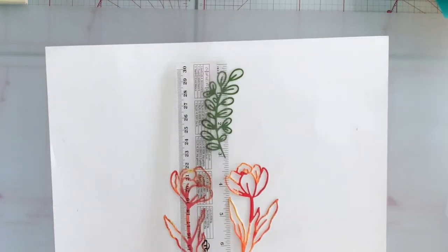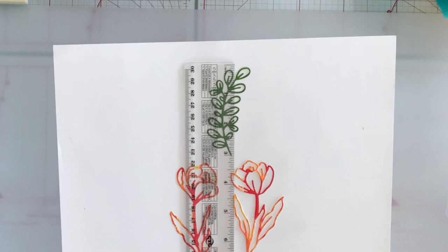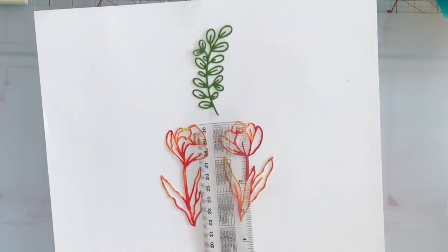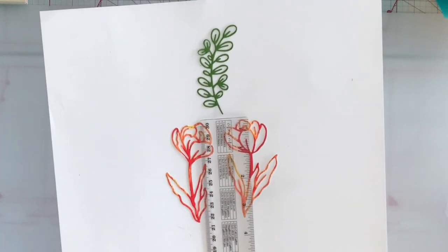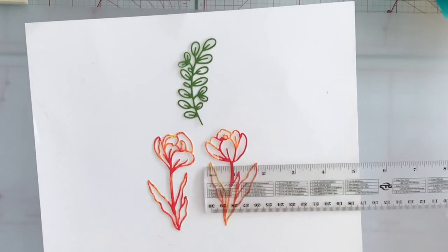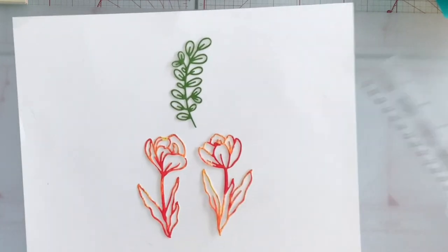So the leaf is three inches and the flowers are three and a quarter by one and three quarters.